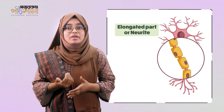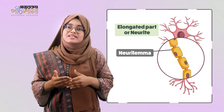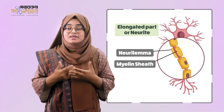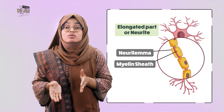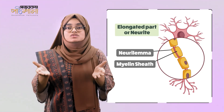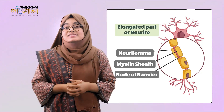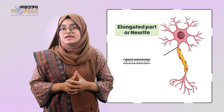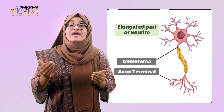A thin layer or membrane that encloses the axon is called the neurilemma. There is a fatty layer between the neurilemma and the axon called the myelin sheath. The myelin sheath is not continuous — it is interrupted at regular intervals. There is a direct connection between the neurilemma and the axon at these interrupted parts, and this unmyelinated part is known as the node of Ranvier. The membrane which covers the main axis of the axon is called the axolemma, and the end part of the axon is divided into axon terminals.